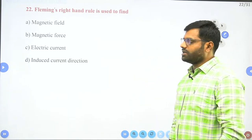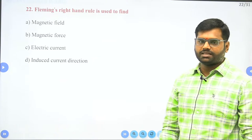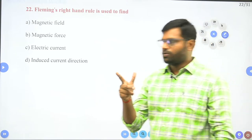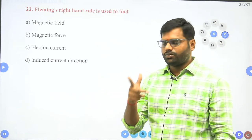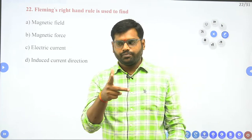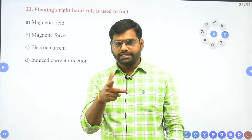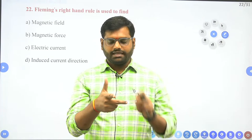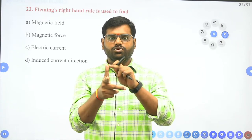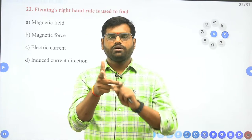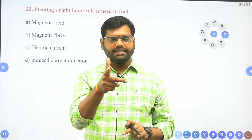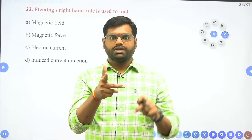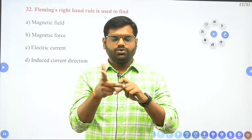Fleming's right hand rule — according to Fleming's right hand rule, the four fingers give the direction of magnetic field, the thumb gives the direction of motion of a conductor in a magnetic field, and the middle finger gives the direction of induced current.